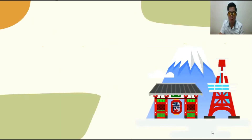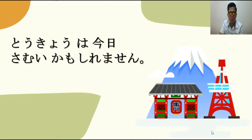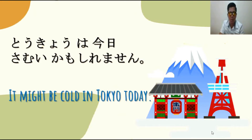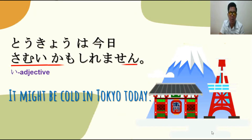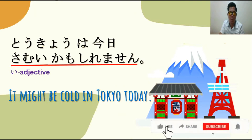For example: Tokyo wa kyo samui kamo shirimasen. Means, it might be cold in Tokyo today. So, yung adjective na ginamit natin ay i-adjective, which is samui. Yung plain form ng i-adjective ay as-is lang ang 'i', so hindi natin tinanggal ang 'i', then plus Kamo Shirimasen. Ibig sabihin, it might be cold.